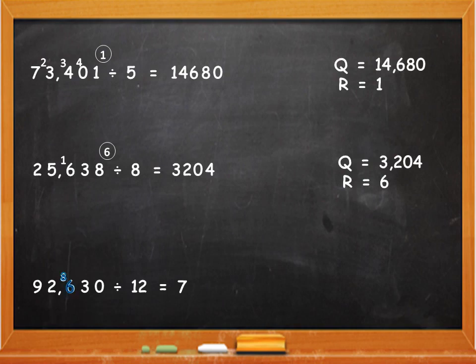Now divide 86 by 12. Again, 12 will go 7 times. So write 7. 12 sevens are 84. 86 minus 84 is 2. Now divide 23 by 12. 12 will go only once. 12 ones are 12. 23 minus 12 is 11.